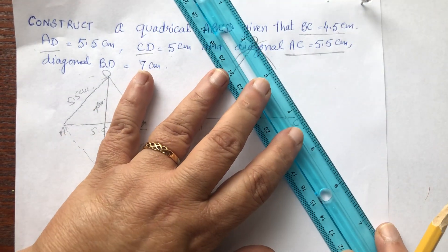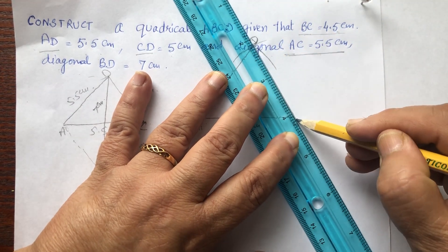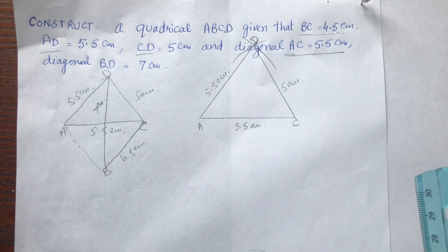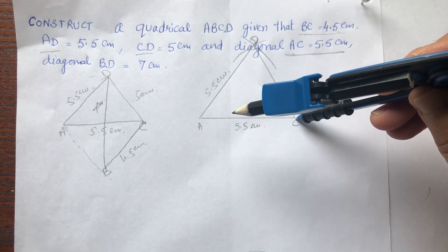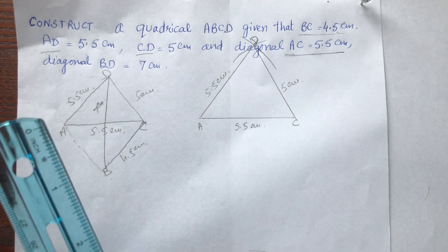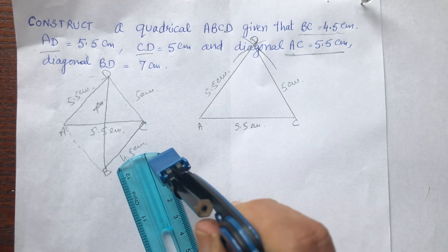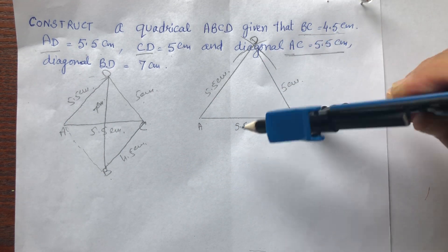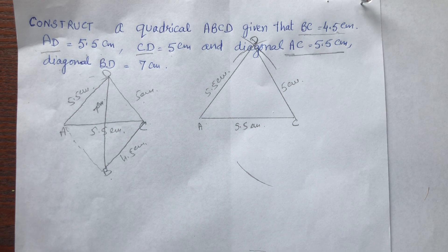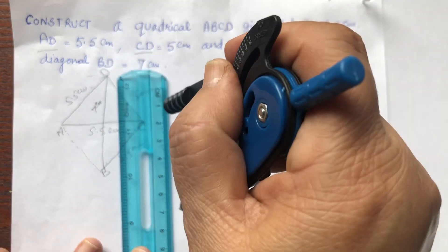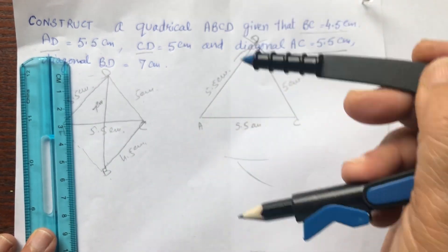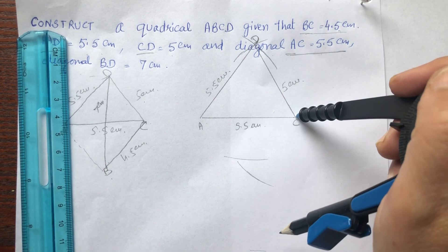With CD it comes to 5 centimeters, and AD is 5.5 centimeters. Now the next side: BC is given as 4.5 centimeters as the rough diagram shows — draw the arc of 4.5. This is 4.5, and one more: diagonal BD is 7 centimeters. Taking D as center, draw this arc.